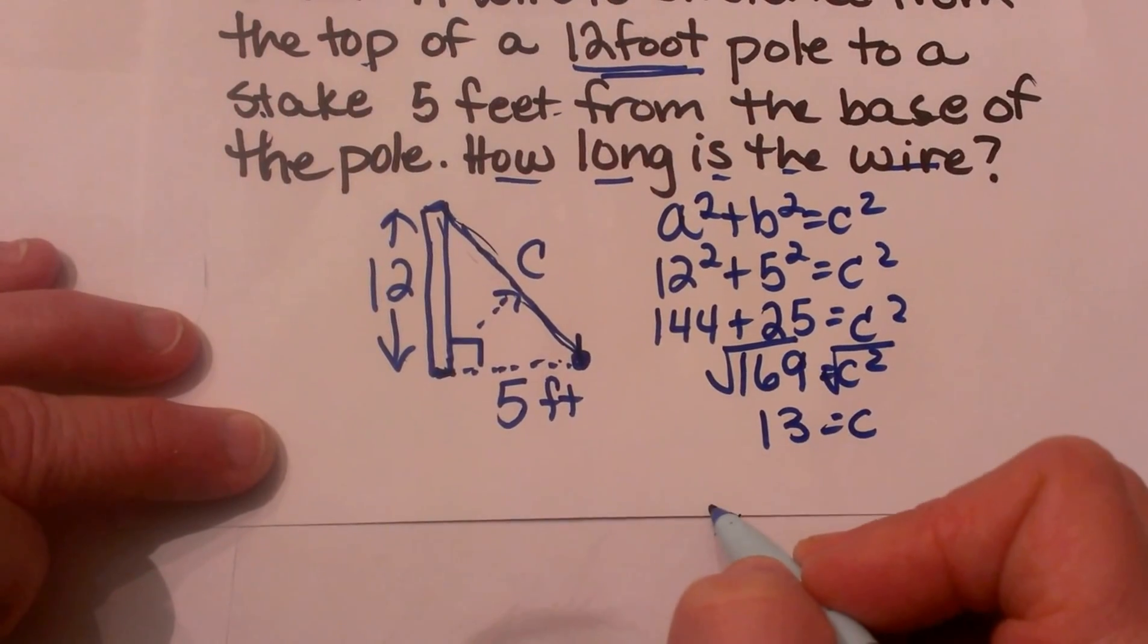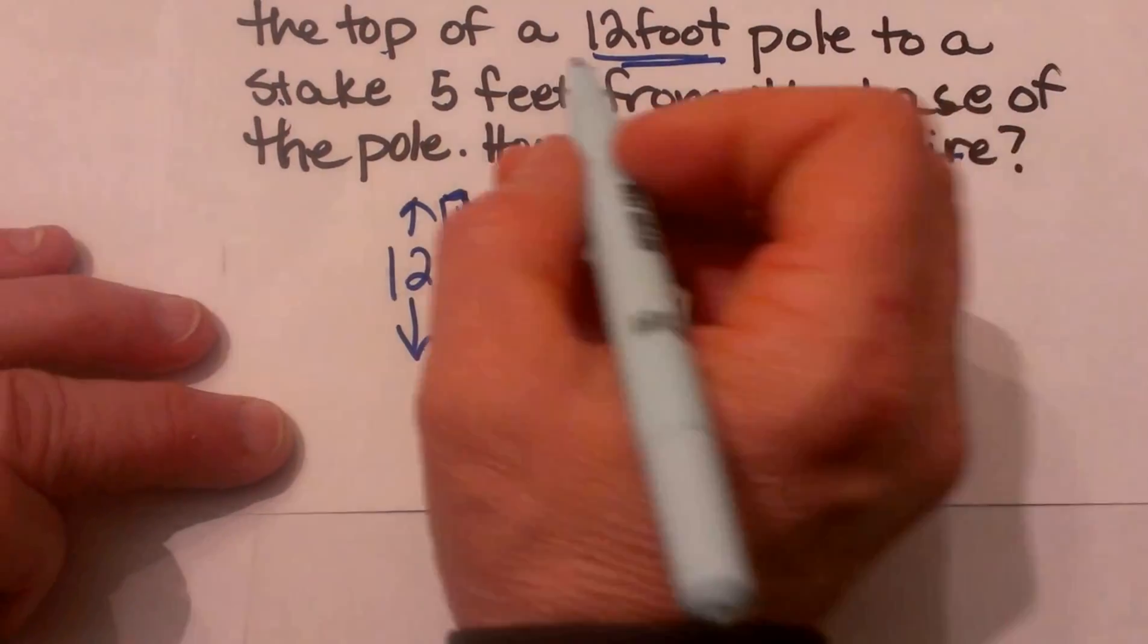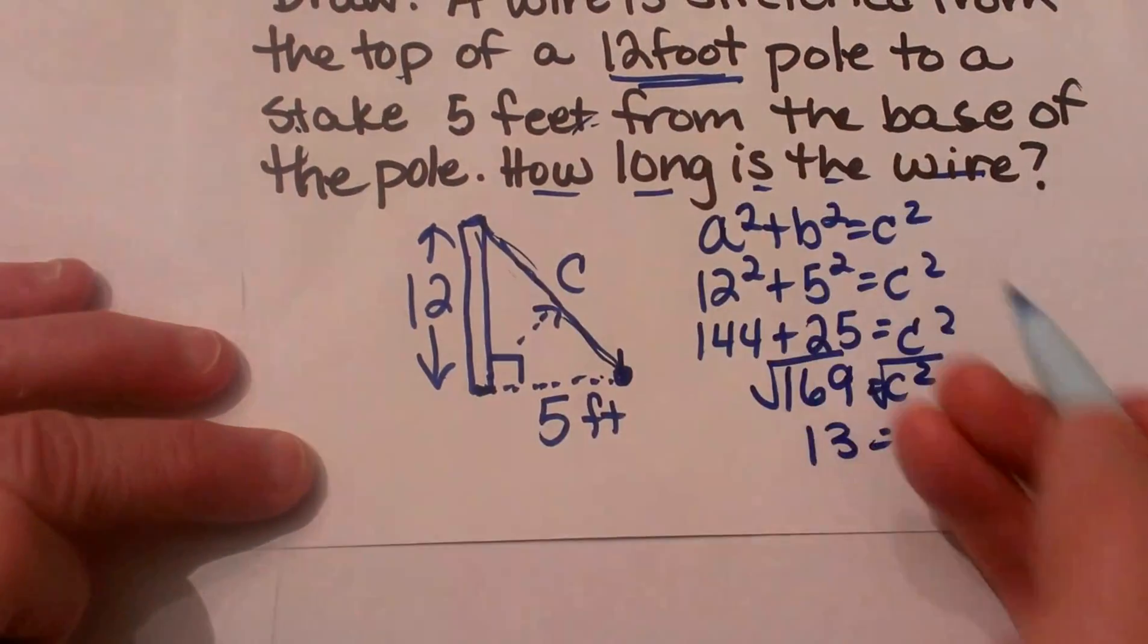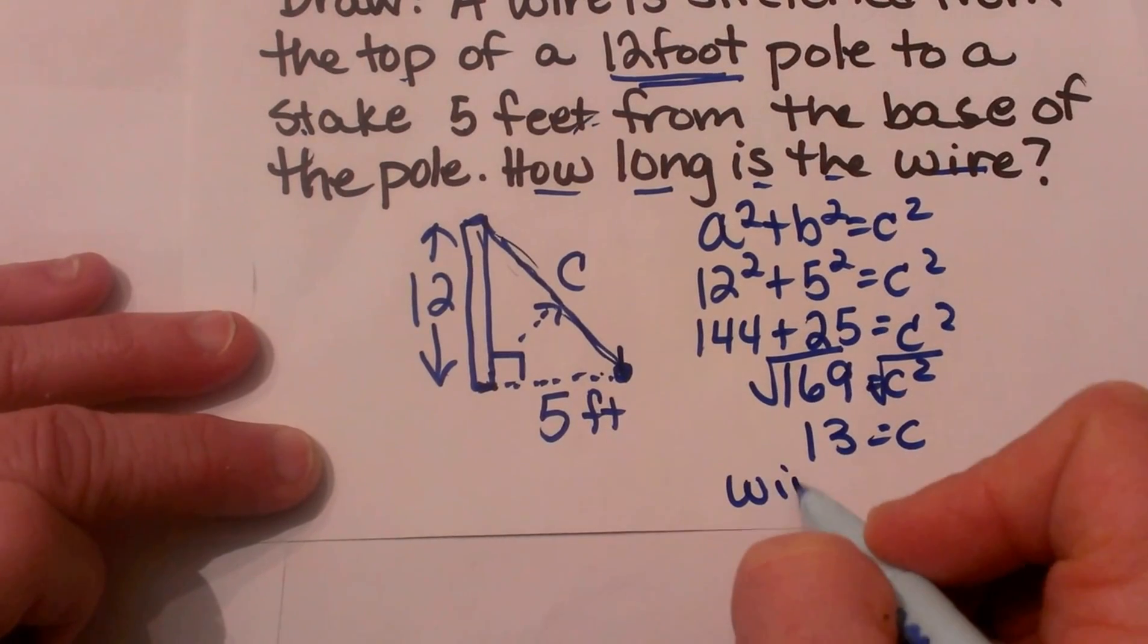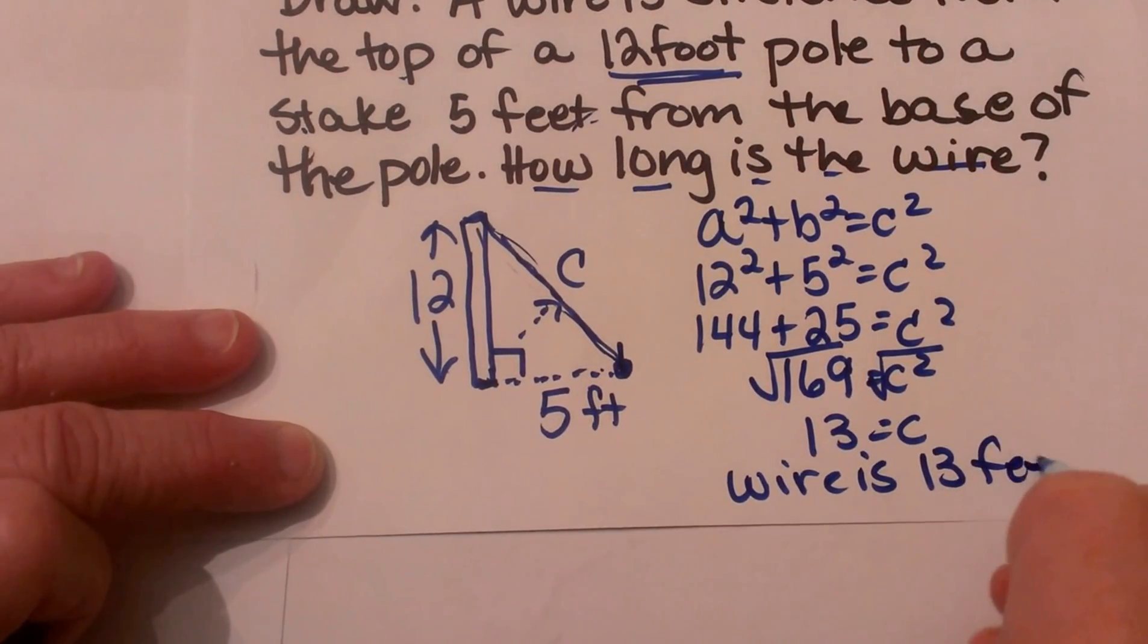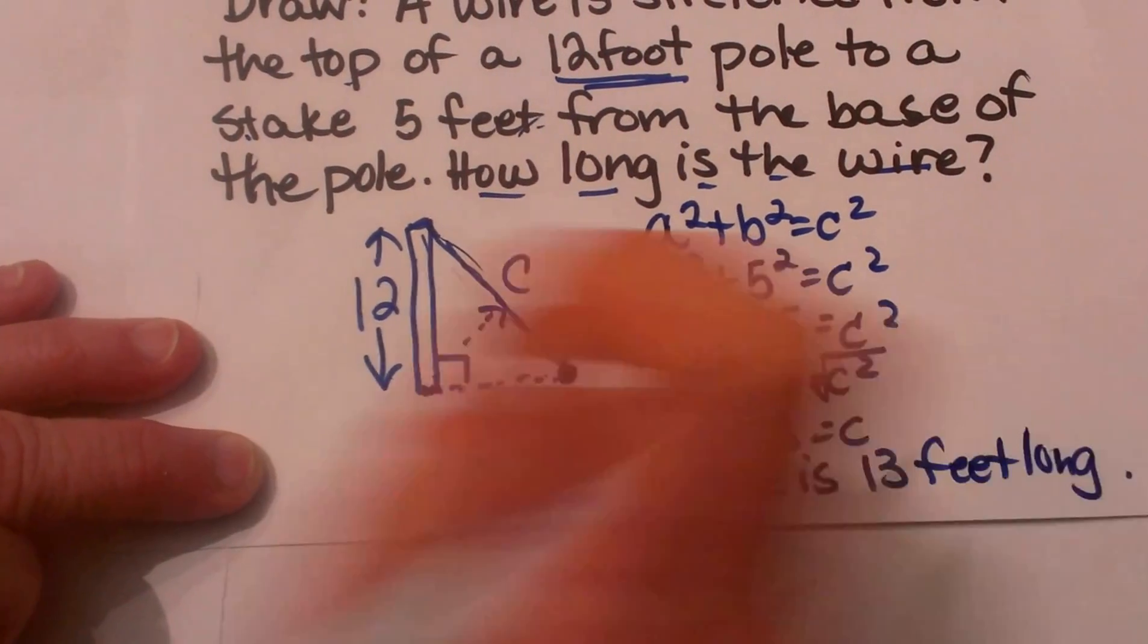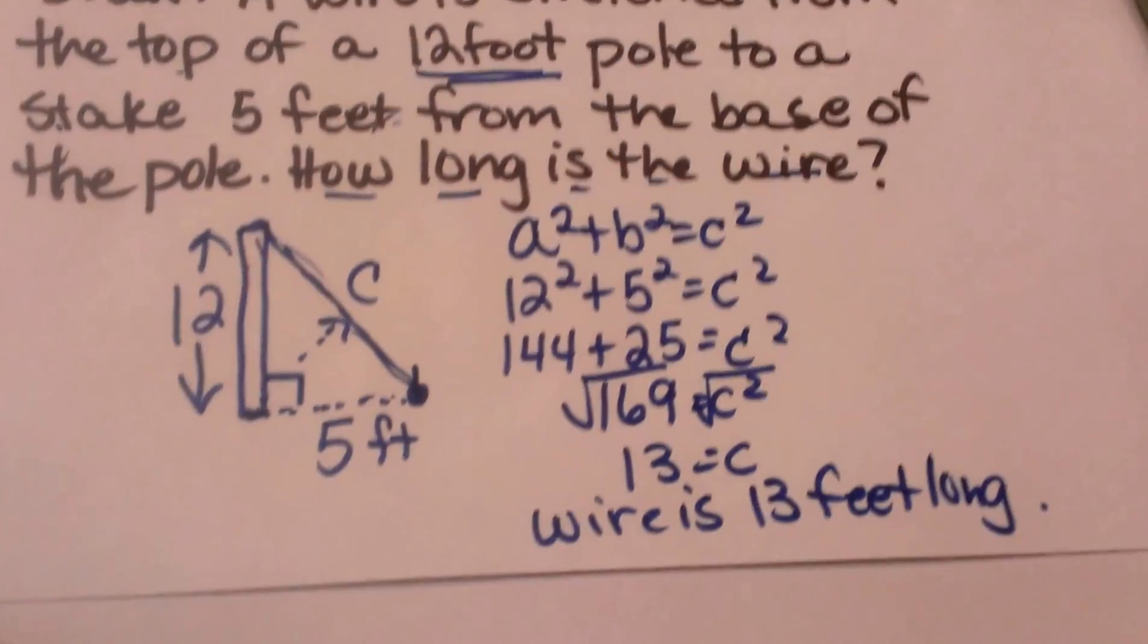So that means the wire is 13 whatever unit long. Well if you go back to the word problem, all these units are in feet. So that means the wire is 13 feet long. And there you go. There is a second word problem for you. I hope this was helpful. Thank you very much.